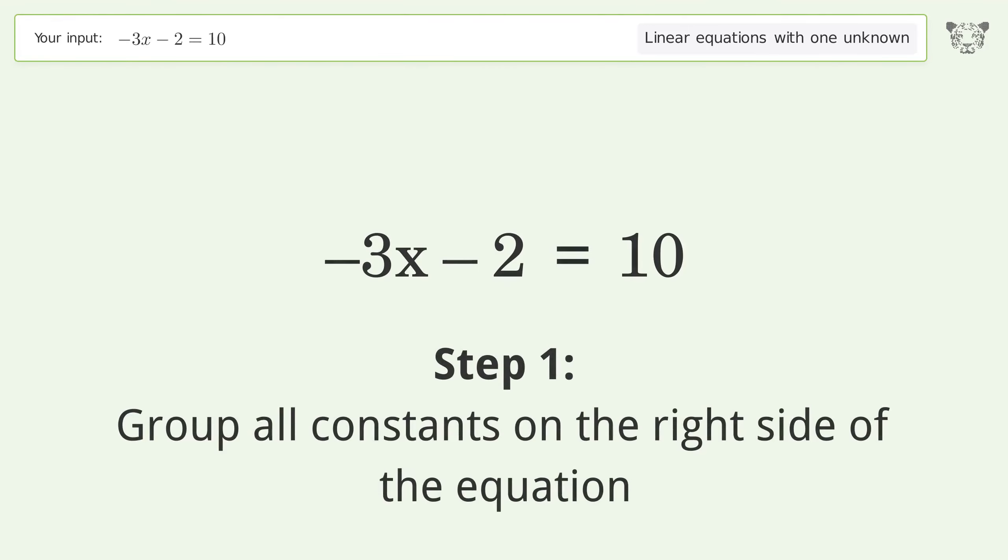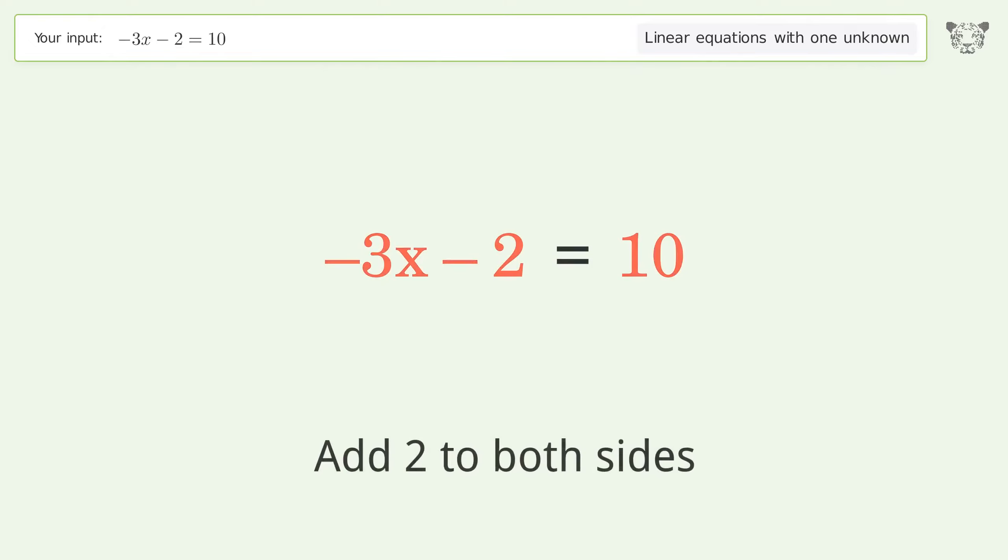Group all constants on the right side of the equation. Add 2 to both sides. Simplify the arithmetic.